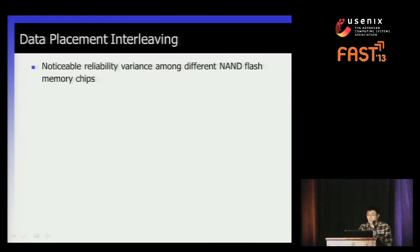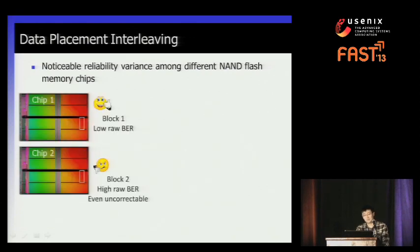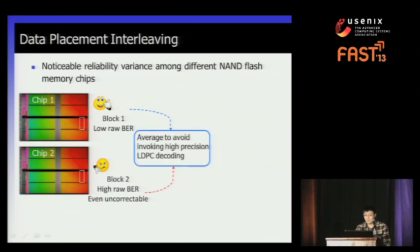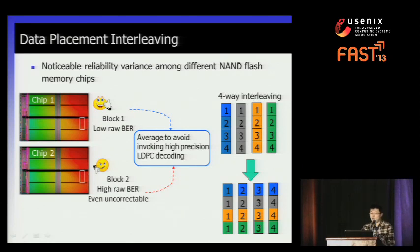The last technique is data interleaving. This is based on the fact that reliability varies among different NAND flash chips. Pages from one chip may have a low error rate while pages from another chip may suffer from a high error rate. We can average them to get a moderate error rate and avoid invoking high-precision decoding. For example, we can organize four LDPC code words into four interleaved pages to average the error rate and reduce the probability of invoking high-precision decoding and sensing.